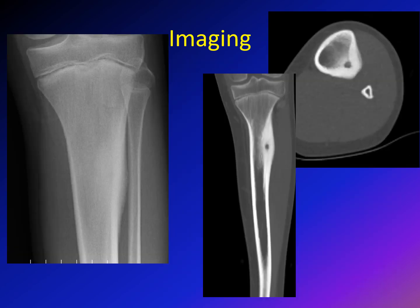To review: on the x-ray you can see normal cortex in most areas and very thickening and sclerosis in the affected area. On the CAT scan axial cut, you can see the nidus surrounded by a radiolucent area and the sclerosis in the host bone. On the coronal cut, you can see the radiolucent area surrounded by the massive sclerosis.